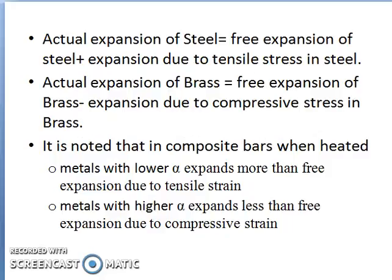What actually happens is: the actual expansion of steel = free expansion of steel (i.e., if not joined together) plus the expansion due to tensile stress in steel. Whereas for brass, if it were a free bar it would have expanded more, but since it is attached to steel it has to expand less. Therefore, the actual expansion of brass = free expansion of brass minus the expansion due to compressive stress in brass.